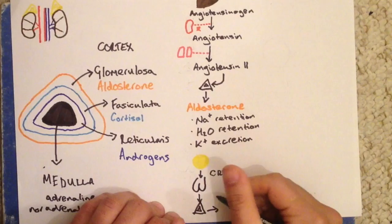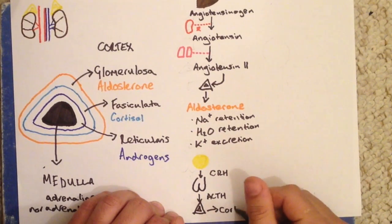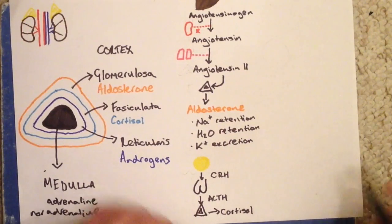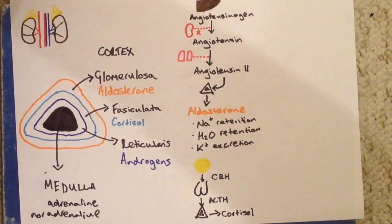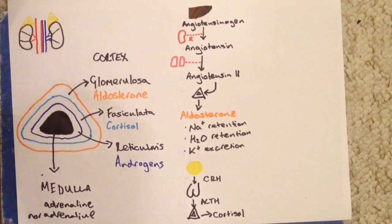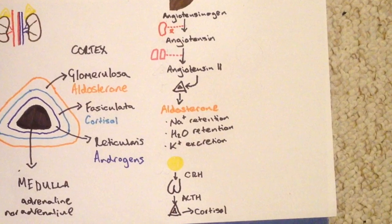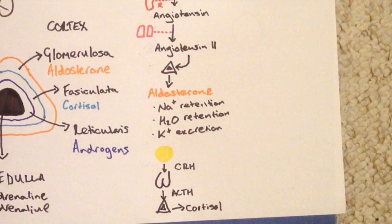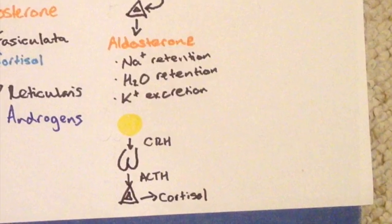So the second feedback loop I want to talk about is called the hypothalamic pituitary axis, and this is involved in the regulation of cortisol. It starts off with the hypothalamus, which releases CRH or corticotropin-releasing hormone. This stimulates the synthesis and release of ACTH, or adrenal corticotropic hormone, from the anterior pituitary gland. This ACTH then stimulates the release of cortisol from the adrenal cortex.